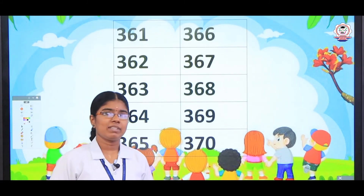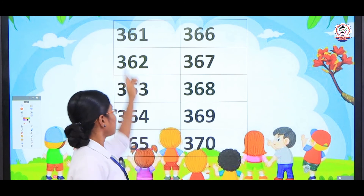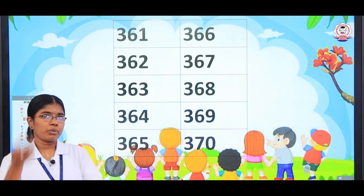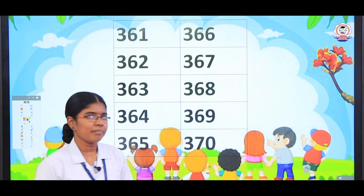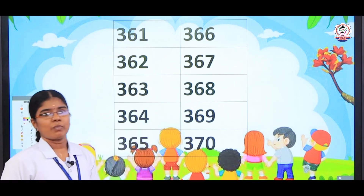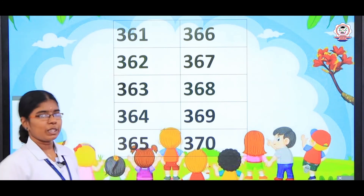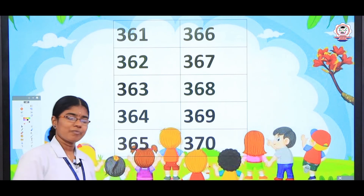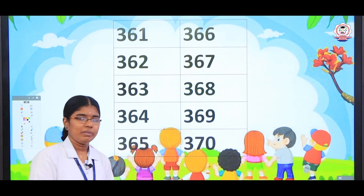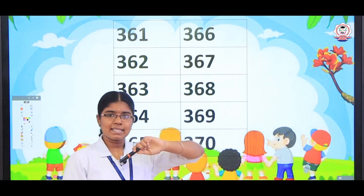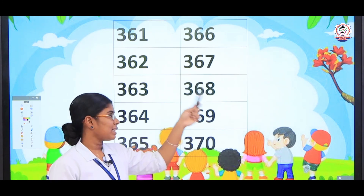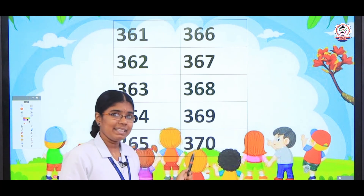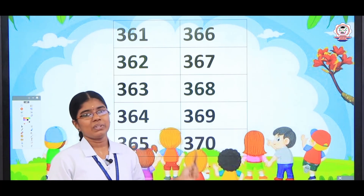So in this class we have learned the numbers from 361 to 370. I am going to read these numbers — you have to repeat after me. 361, 362, 363, 364, 365, 366, 367, 368, 369 and then 370.